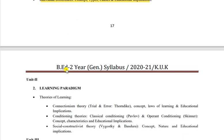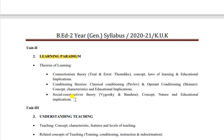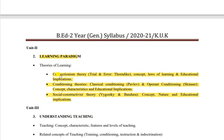Do questions jo aate hain yahan se - ek topic kar sakte hain. Ek question learning pe, ek individual differences pe - yeh first unit se rahega. Unit 2 pe baat karein - learning paradigm aur theories of learning yahan par rehti hain. Different psychologists ne different theories di hain, apni apni observations aur experiments karne ke baad. Bahut important hai yeh unit - TET exam mein bhi bahut helpful rahegi. Thorndike ka trial and error method, Pavlov ki theory, Skinner ki theory, Vygotsky aur Bandura ki theory - ek skip kar sakte hain agar chahein, baaki sab zaroor karein.